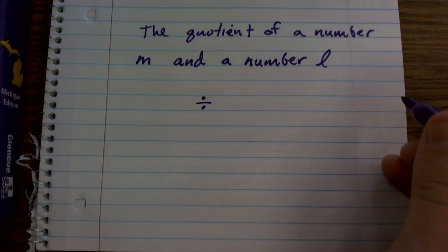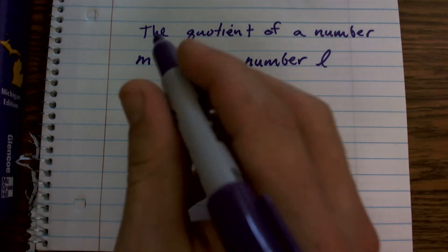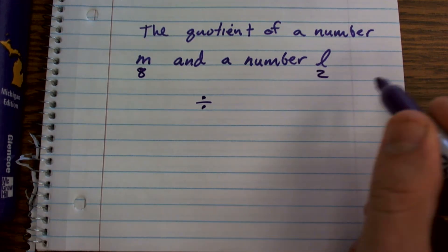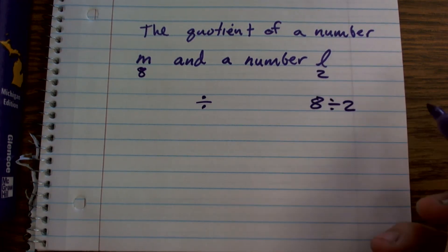let's find the quotient of 8 and 2. All right, and let's just pretend it was 8 and 2. Well, then we'd write 8 divided by 2.